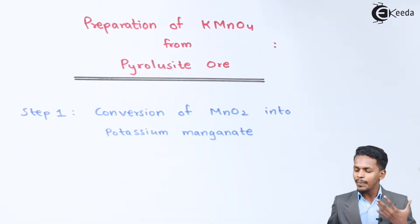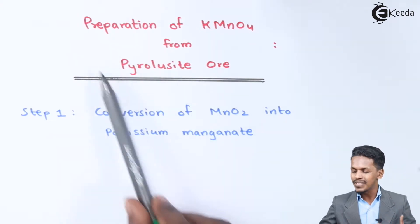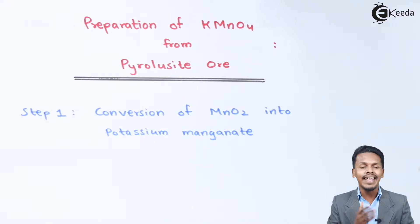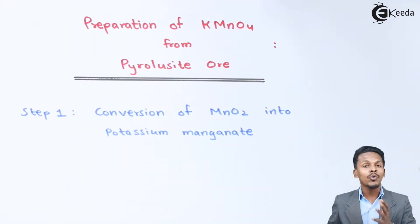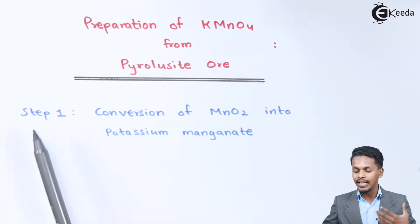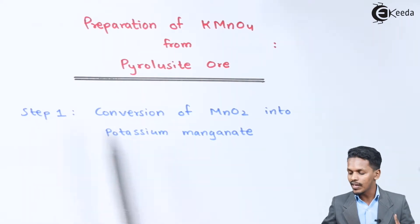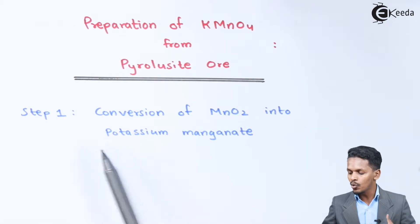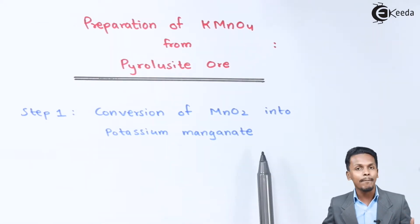Here we are going to talk about the preparation of KMnO4 from pyrolusite ore. There are different methods and techniques to obtain KMnO4 from the ore, but here I am going to talk about a specific reaction — the main two-step reactions. Step one is the conversion of MnO2, which is nothing but pyrolusite ore, into potassium manganate.